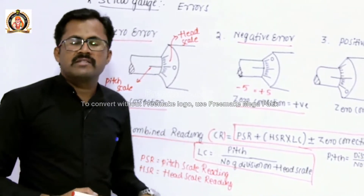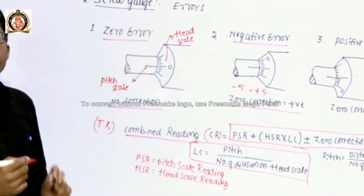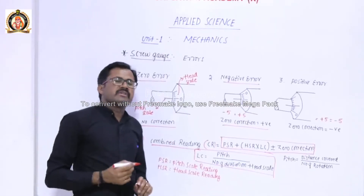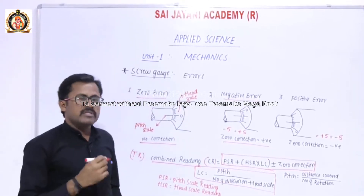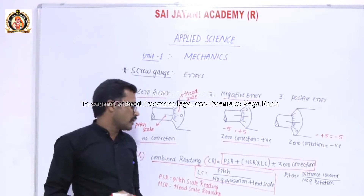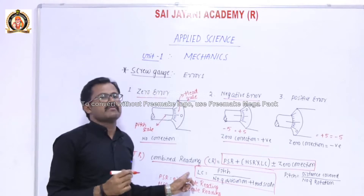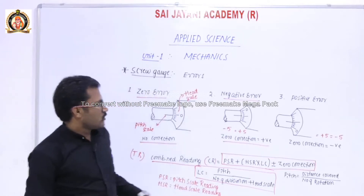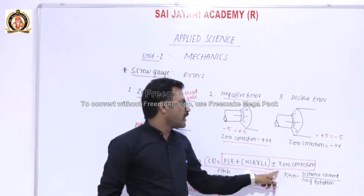Least count is the smallest measurement that can be measured from any measuring instrument. The plus or minus zero correction in the formula depends on the type of error.